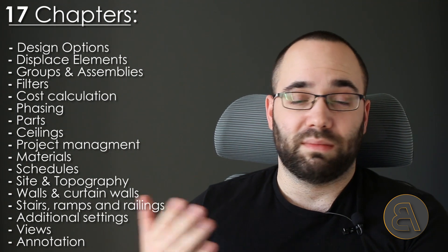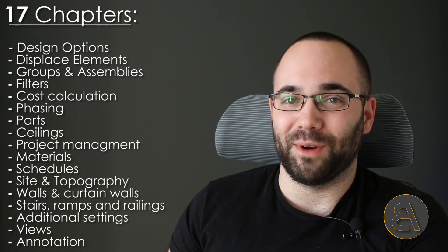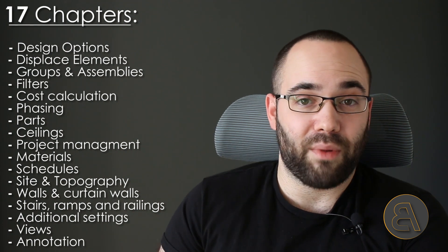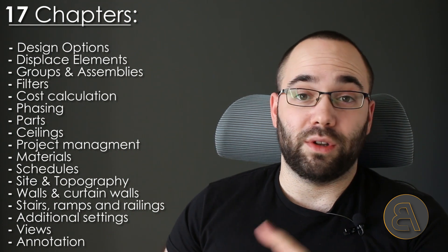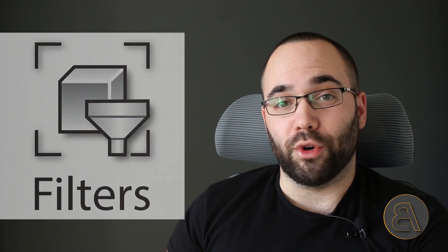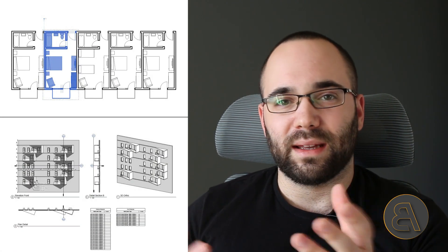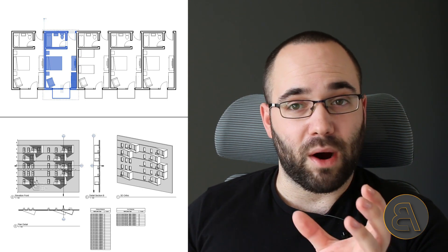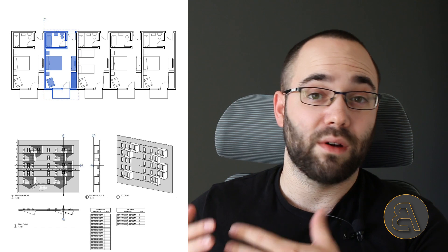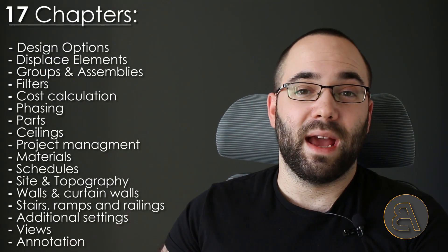The course also covers displaced elements — a tool that looks simple on the surface but is actually quite complex, and you can achieve really powerful things if you know how to utilize it properly. I also show you how to use filters in Revit, which is a really important and powerful feature. And there's a chapter on groups and assemblies, explaining the difference between the two — they can get confusing but they're very powerful, each with its own way of being used and applied.